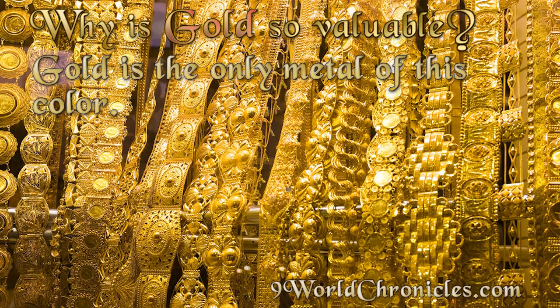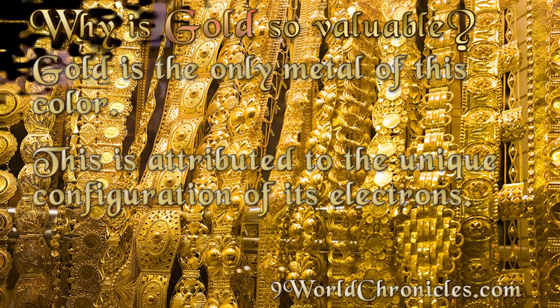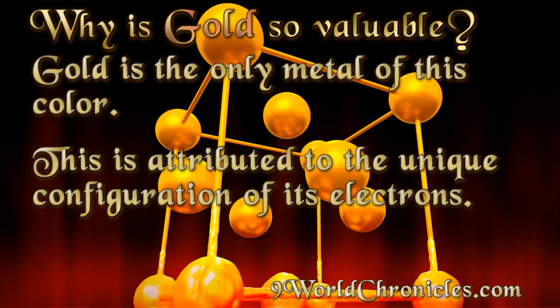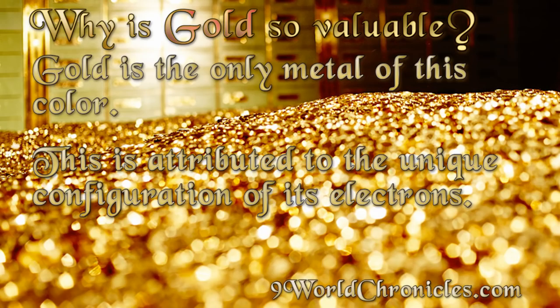Gold's characteristic yellow color is due to the particular arrangement of its electrons. When alloyed with other metals like silver or copper, it has different colors according to the percentage of the alloy.